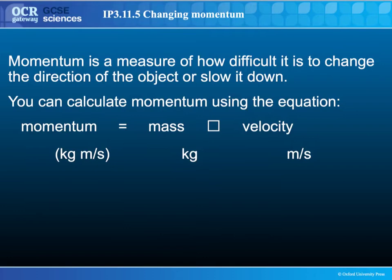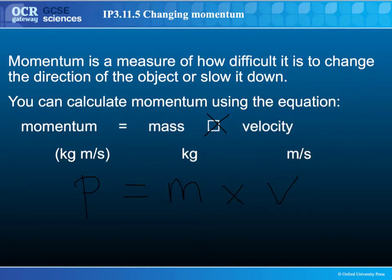You can calculate momentum using this equation. The momentum, or P, equals the mass of the object times the object's velocity. Because the mass is in kilograms and the velocity is in meters per second, and they are multiplied together, the units of momentum are kilogram meters per second.